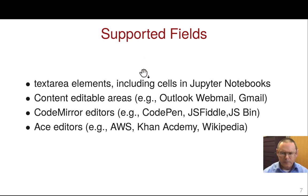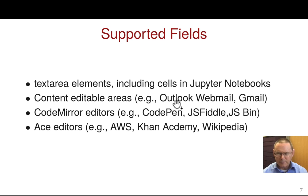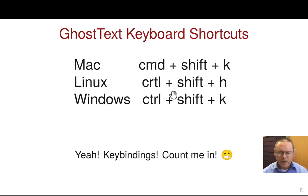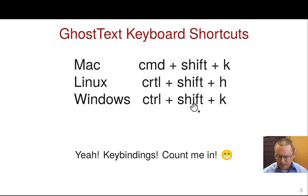So in terms of plain text areas like in Overleaf and cells in Jupyter Notebooks, these are other areas that can be edited — like the text areas within Outlook, Webmail, and Gmail. Instead of having to click with the mouse, one can also use keybindings or keyboard shortcuts. Here are the ones for the three major operating systems.